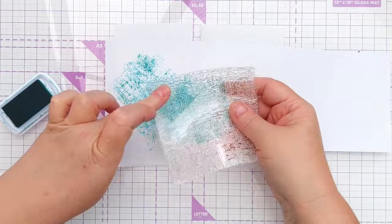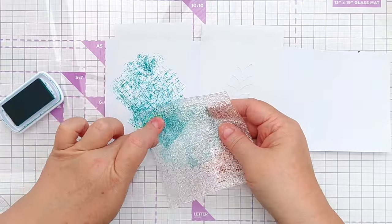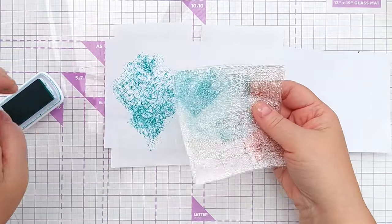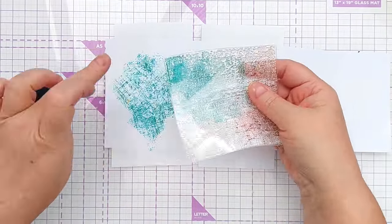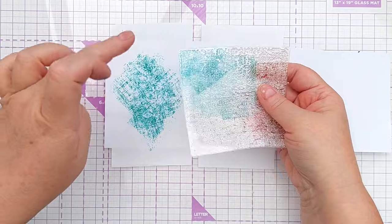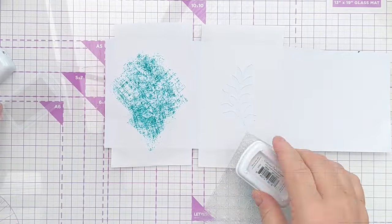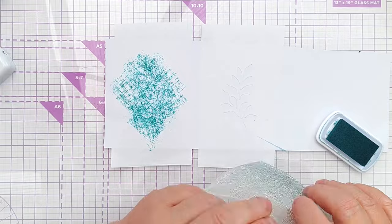I did bring in a couple of other Catherine Pooler inks in the same kind of bluey green, greeny blue colour family, some lighter, some darker and in total I made three leafy branchy stenciled textural images.